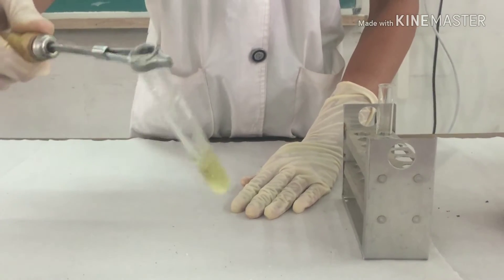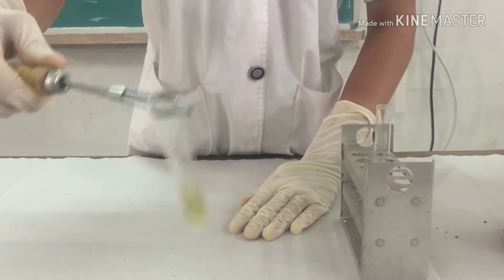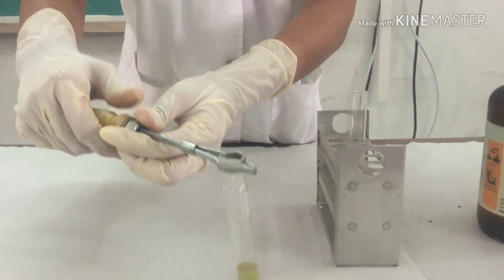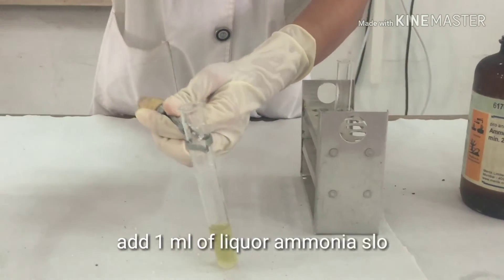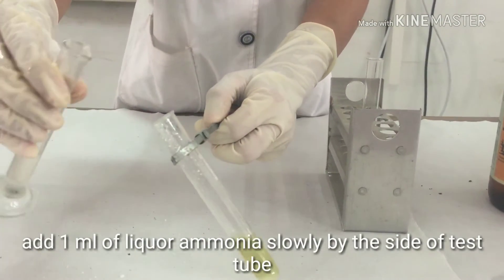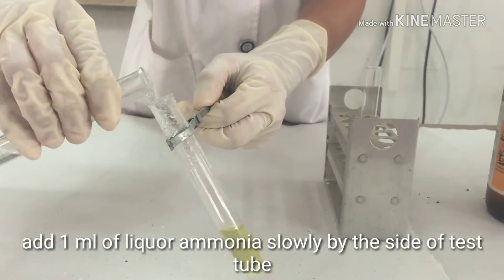Shake the contents well and slowly add ammonia solution drop wise to the side of the test tube.